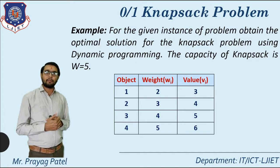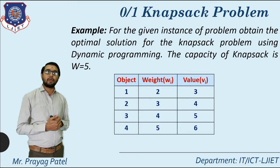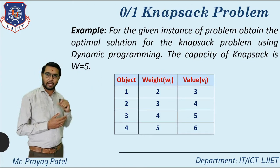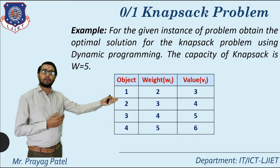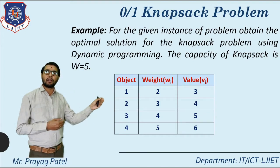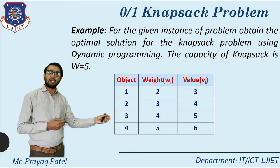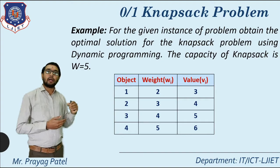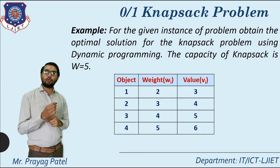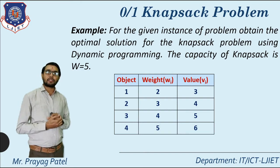Consider an example of 0/1 Knapsack: obtain the optimal solution using dynamic programming. The capacity of the Knapsack is W = 5. There are 4 objects. Object 1: weight = 2, value = 3. Object 2: weight = 3, value = 4. Object 3: weight = 4, value = 5. Object 4: weight = 5, value = 6. Total Knapsack capacity = 5.